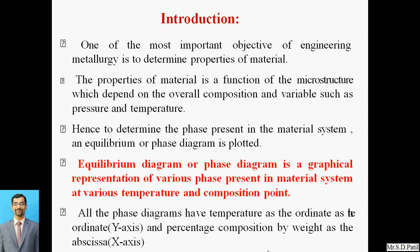First we will cover the introduction part. One of the most important objectives of engineering metallurgy is to determine the properties of material. The properties of material are a function of microstructure, which depends on the overall composition and variables such as pressure and temperature.